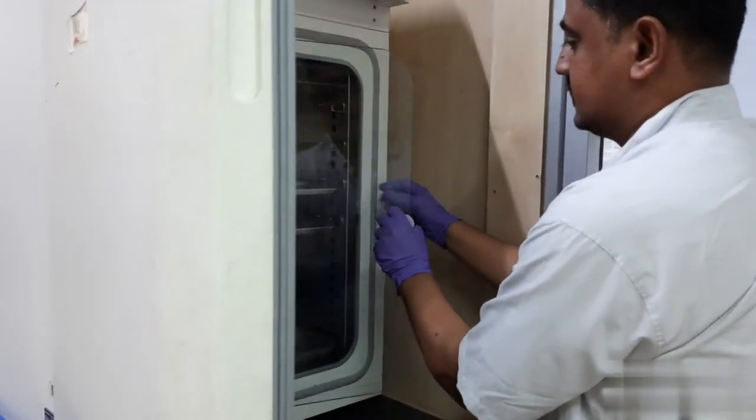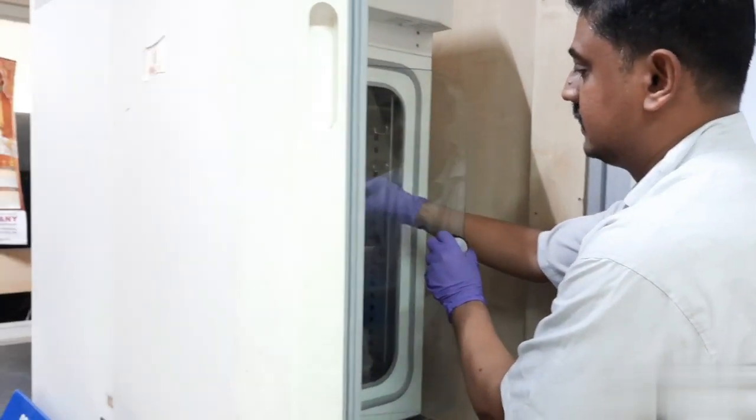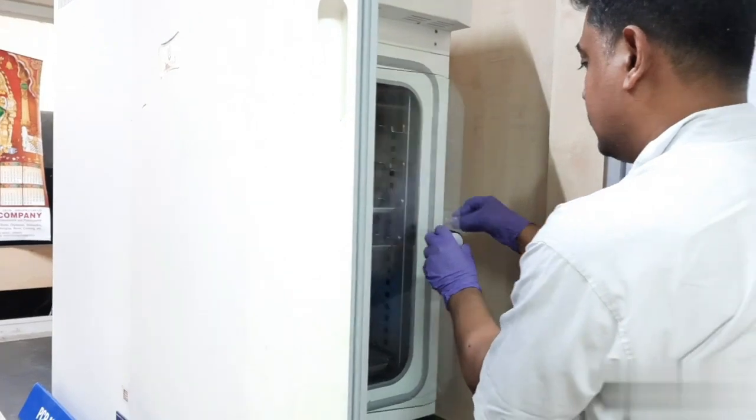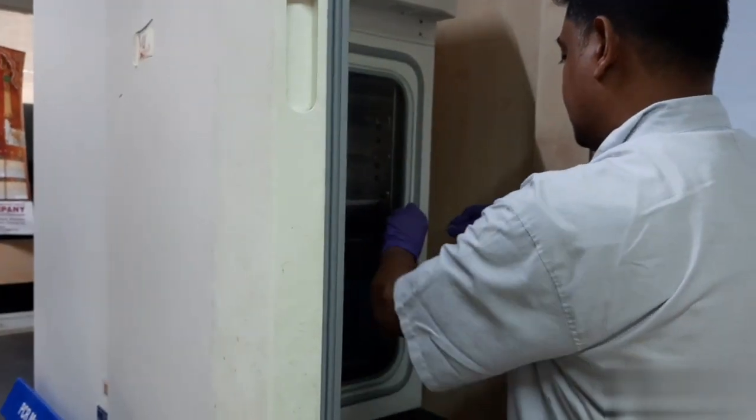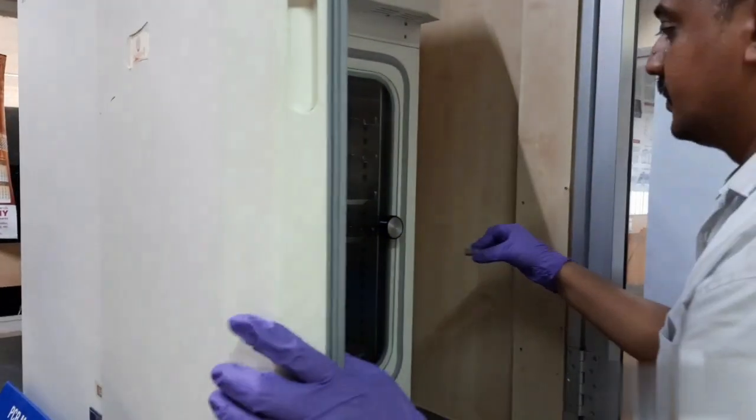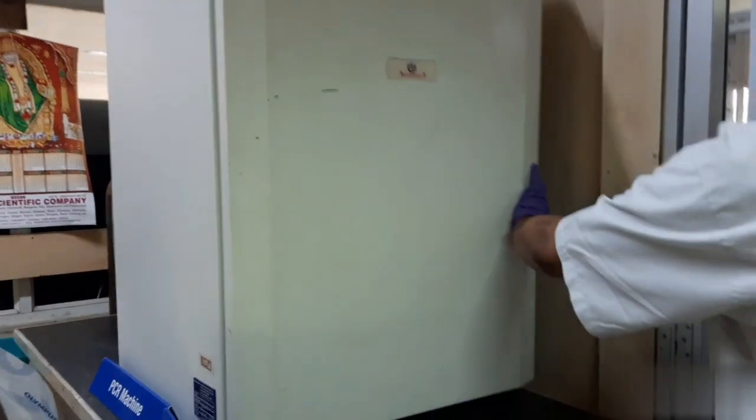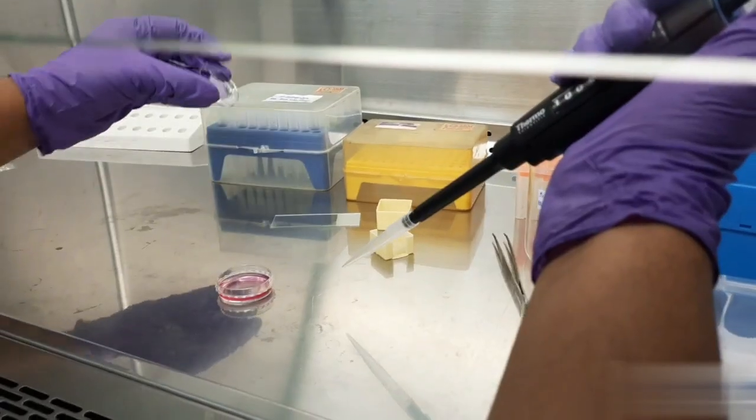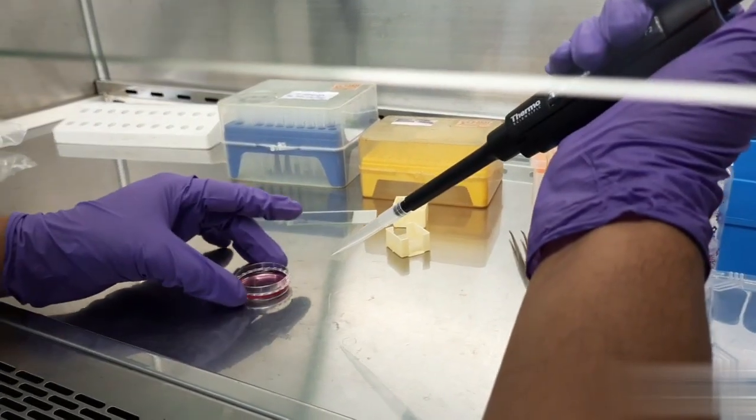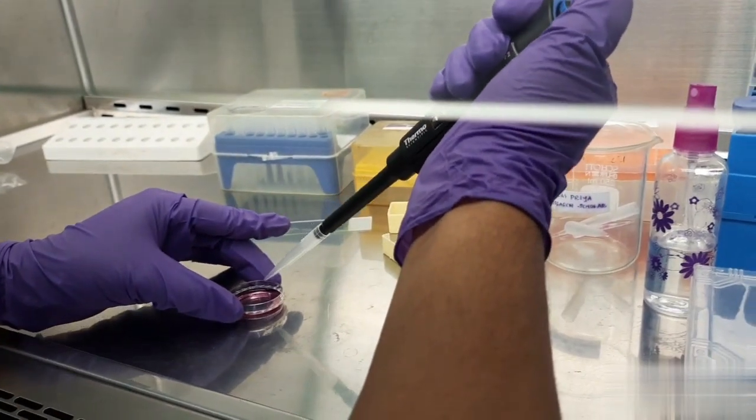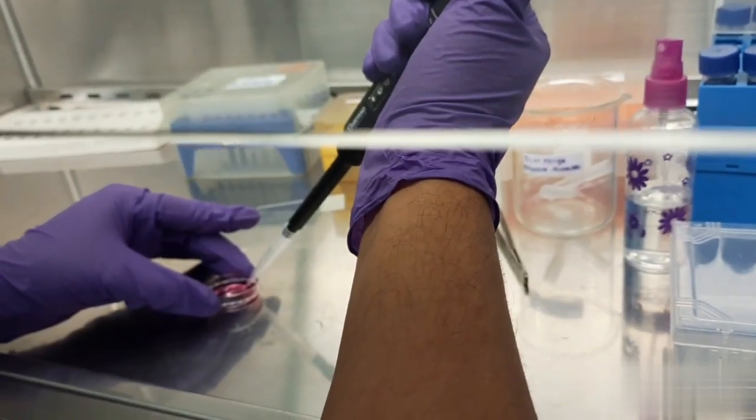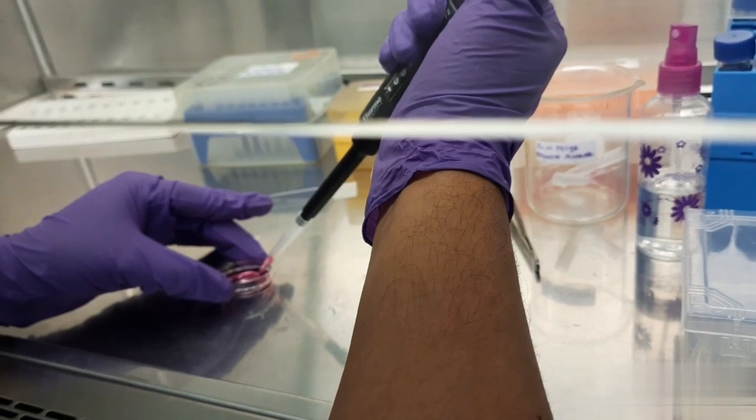After overnight incubation we shall take the seeded cells onto the cover slip within a petri plate and then process it for the fixing of cells. We will place the lid without disturbing the cover slip. Try to gently remove the media and then discard it.